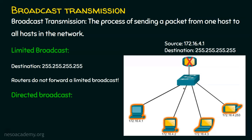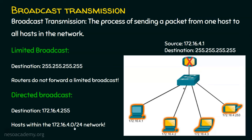Coming to directed broadcast — this is depending upon the network. An example directed broadcast is 172.16.4.255. The hosts within the 172.16.4.0/24 network will be receiving this broadcast. Slash 24 means it's Class C. In Class C, the first three octets are reserved for the network portion, which is 172.16.4. The starting address in this subnet is 172.16.4.0, and the last IP address is 172.16.4.255. We know 0 and 255 will not be used as host addresses. The first IP address is the network address and the last IP address is the broadcast address. So this is an example directed broadcast address.